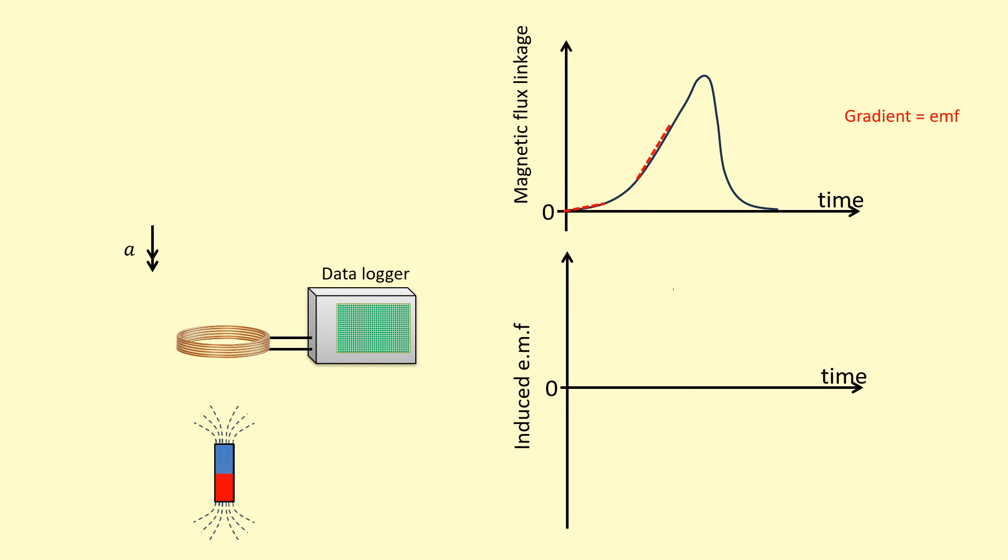So you can see initially there's an increase in magnetic flux linkage, so there's going to be an EMF induced like so. It's getting steeper there. And then at the very top, it levels off. So it's a zero gradient over there. So that's when the EMF induced decreases to zero.